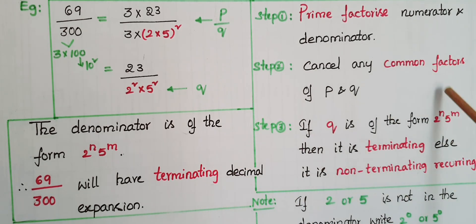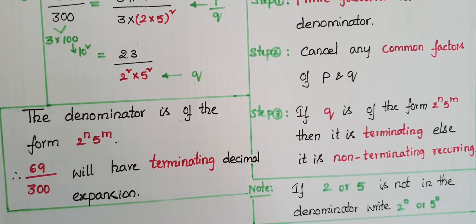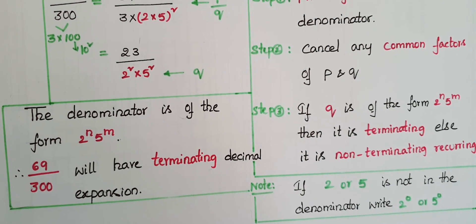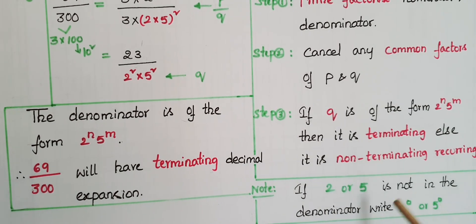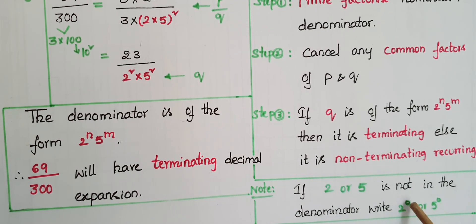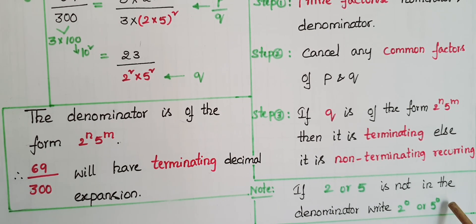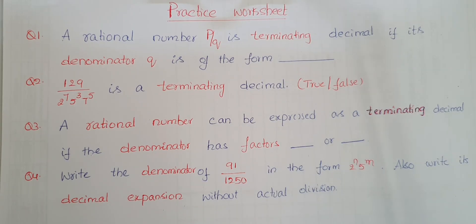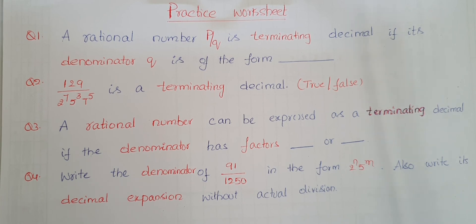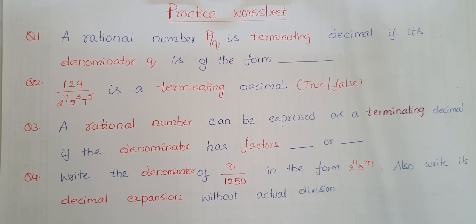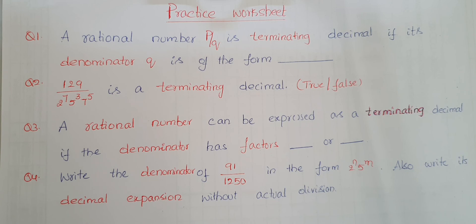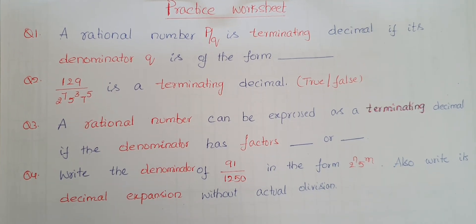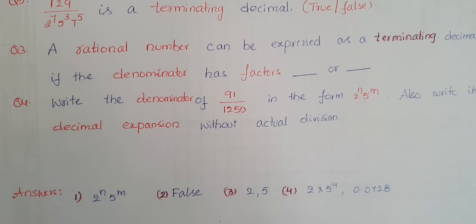If you don't get any factors of 2 or 5 in the denominator, then you can write 2 to the power of 0 or 5 to the power of 0 in the denominator. Now please do this practice worksheet — here are the answers.